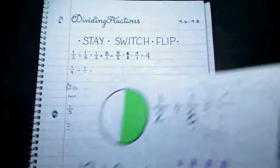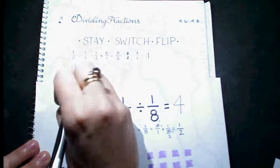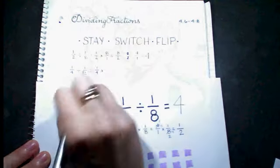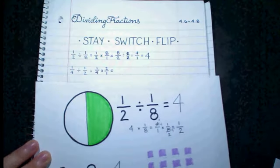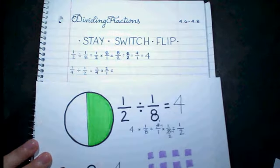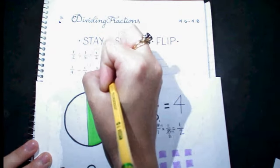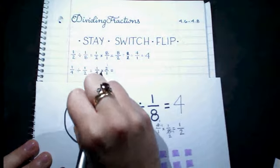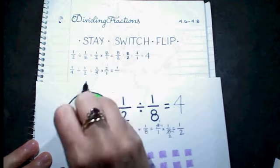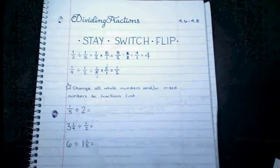So let's look at that down here again using stay-switch-flip. My first fraction stays, my sign switches, and my second fraction flips. You can either cross reduce or simplify at the end — let's cross reduce. The common factor is 2, so dividing both by 2, then 1 times 1 is 1, 2 times 1 is 2, and I did indeed get 1 half as my answer.